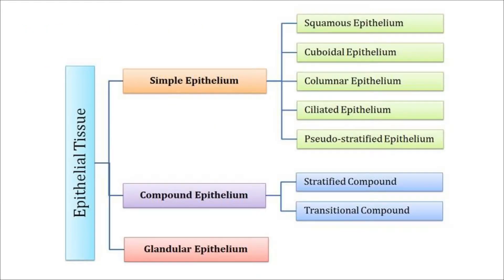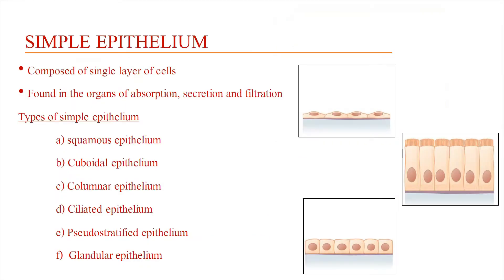Epithelial tissue is classified based on structure into simple epithelium, compound epithelium, and glandular epithelium. Simple epithelium comprises squamous, cuboidal, columnar, ciliated, and pseudo-stratified epithelium. Compound epithelium consists of stratified compound epithelium and transitional compound epithelium.